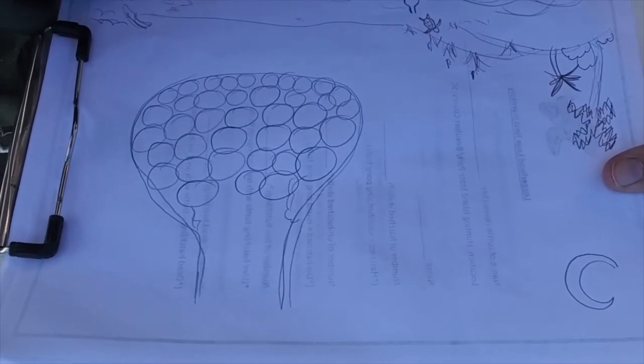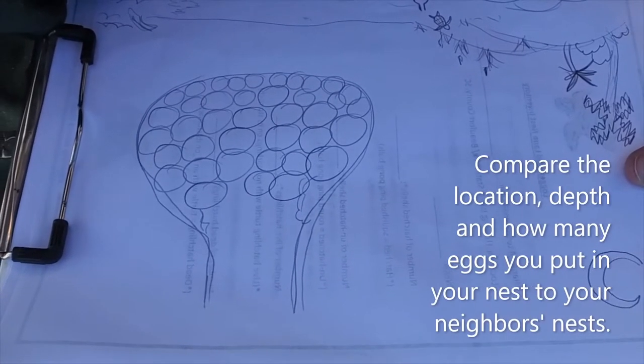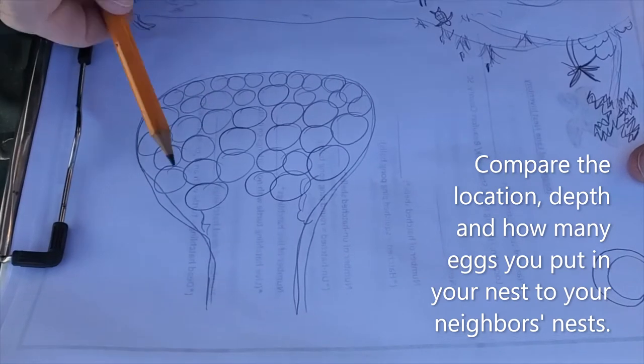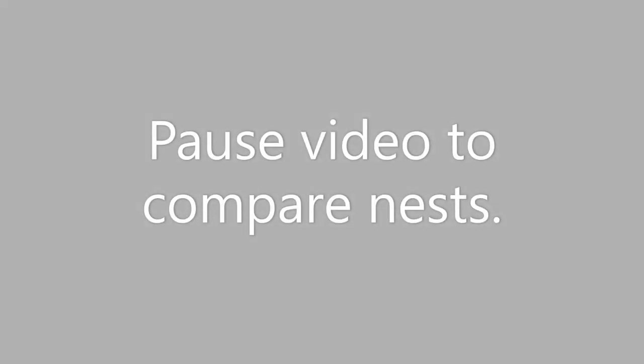Alright guys, if you don't mind just showing your nest to your neighbors and seeing what they did different from yours. What's different? Is this part longer? Do they have more eggs than you? Is this part kind of shorter? What does it look like? Did you guys notice that your egg chamber was different from your neighbors? Probably so — they're probably not all the same, are they? Neither are sea turtle nests. These guys come up on the beach; there's really no kind of instruction for them. They just kind of do what feels right, so that's what you guys did.